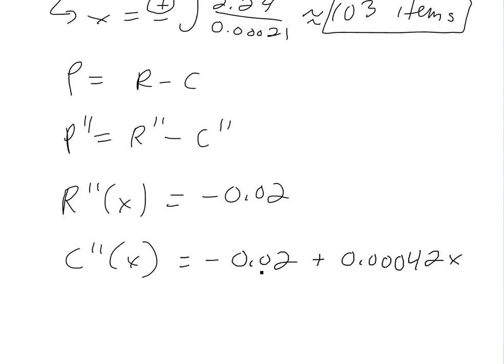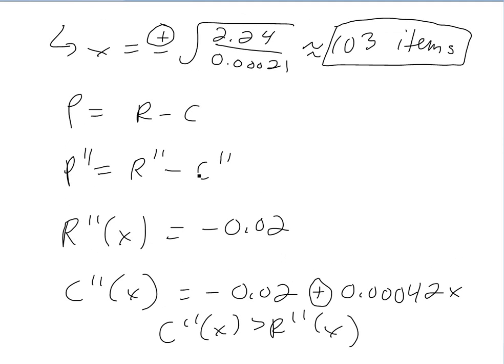As you can see, C double prime of X is always going to be greater than the second derivative of revenue because you have this extra plus here. You're adding whatever this is, this is going to be positive. So then this is always greater than it. If this is greater than revenue, you're going to subtract by a greater number. So what this means is that P double prime is less than zero. And then using the second derivative test, this is always concaving down. So this is a maximum.